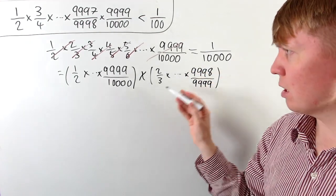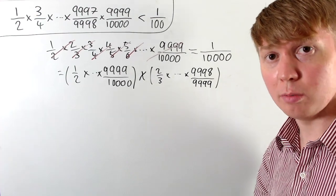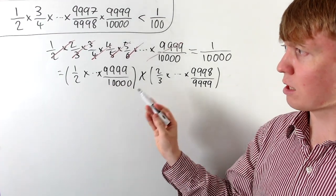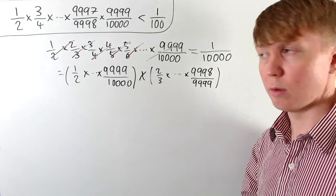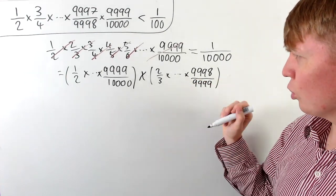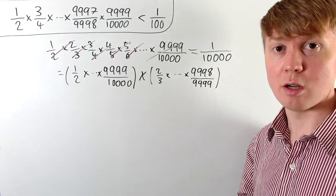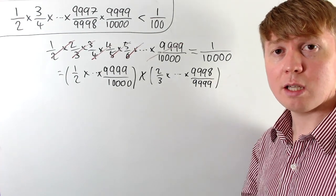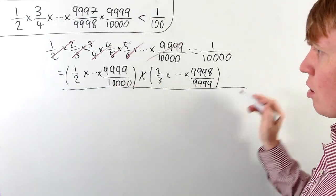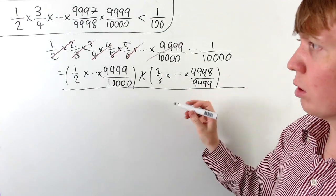If we want to compare this second product to our first product, there's actually a small problem: our first product has 5,000 terms, but there's one fewer term in the second product — only 4,999 terms. So let's consider adding in another term so that we can compare the two products.